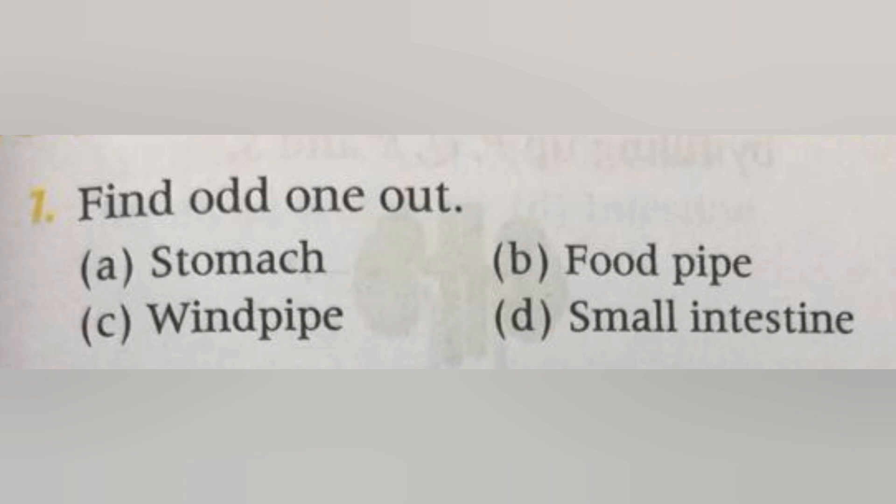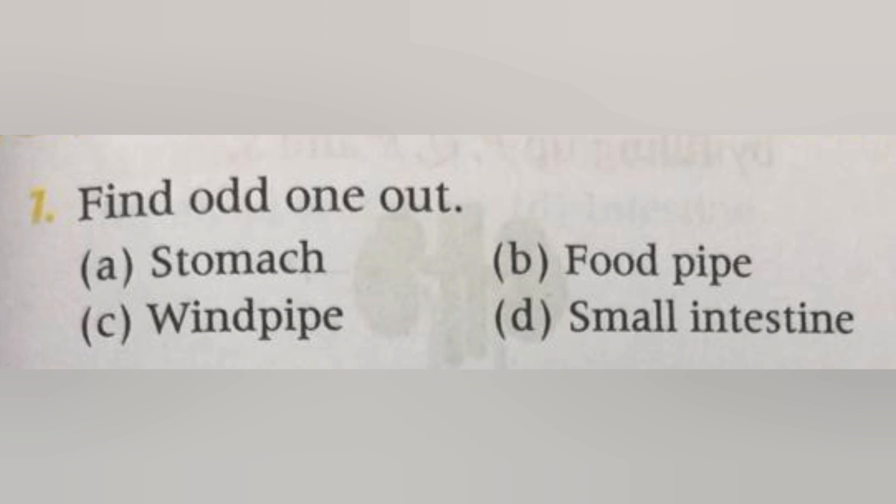Find the odd one out. A. Stomach. B. Food pipe. C. Wind pipe. D. Small intestine. The answer is C, wind pipe. Stomach, food pipe, and small intestine are parts of the digestive system, but wind pipe is a part of the respiratory system.